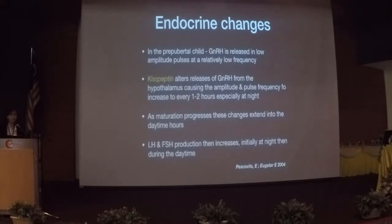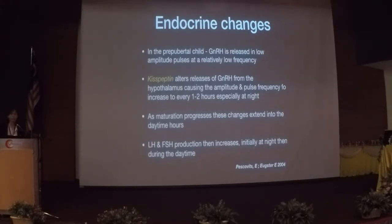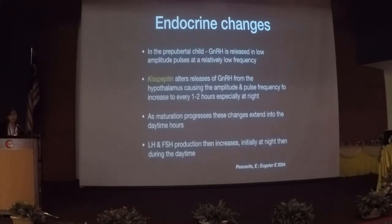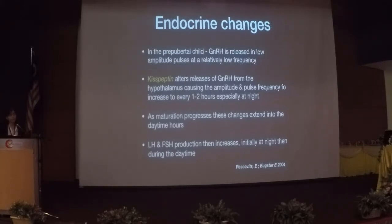What triggers puberty? GnRH is released, but in a pre-pubertal child, it is in very low amplitude and low frequency — essentially sleeping. There is a hormone called Kisspeptin which suddenly appears. We don't really know what triggers it, but it alters the GnRH amplitude, causing it to be higher and increasing frequency, especially at night. As maturation progresses, these changes extend to the daytime as well, and LH and FSH production begins again, mainly at night, then also during the day.